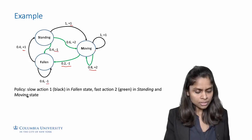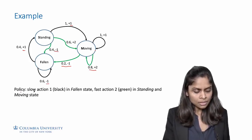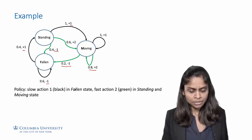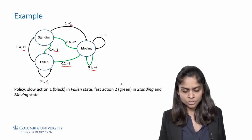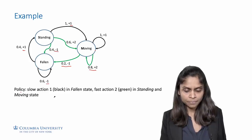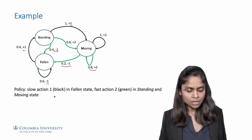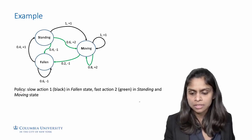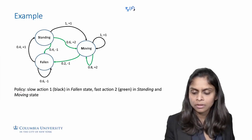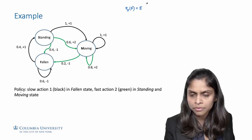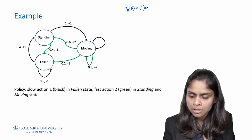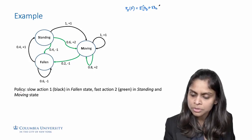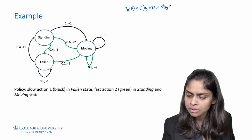Now let's evaluate the following policy. The policy is to take slow action (shown by black arrows) in the fallen state, and the fast action (shown by green arrows) in the standing and moving states. Let's find out the value function for every state when this policy is followed. Let's evaluate the value of this policy starting at the fallen state, that is v_pi(f).